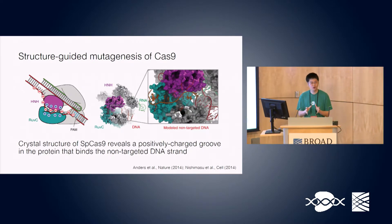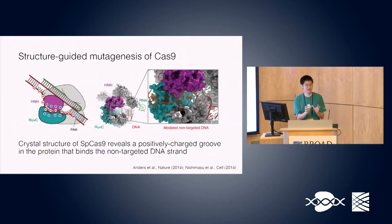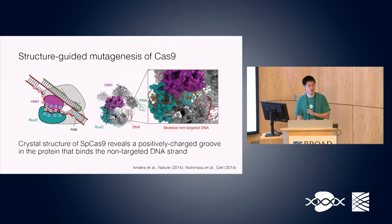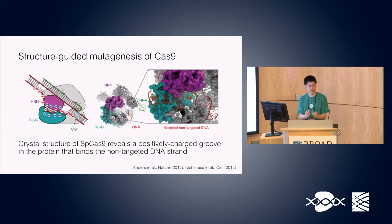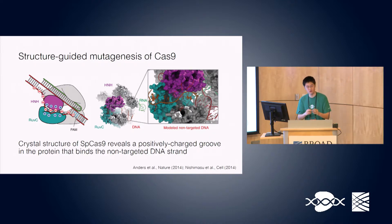The basic idea was: how can we better equip Cas9 to distinguish between on-target and off-target sites? One strategy, observed from the crystal structure, was that the non-target DNA strand — the one that gets displaced as the sgRNA invades the target DNA — is sequestered in a positively charged cleft situated between the HNH-RuvC nuclease domains as well as the PAM-interacting domain. Our hypothesis was that if we attenuate those positive charges so it has less interaction with the phosphate backbone of the displaced strand, we could bias cleavage activity to only targets with perfect matches and reject targets with some number of mismatches.